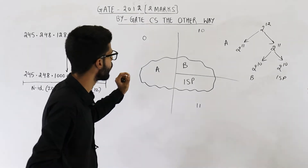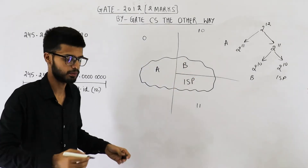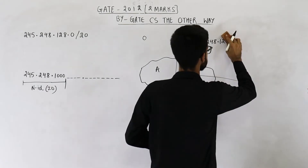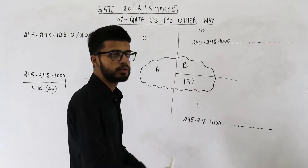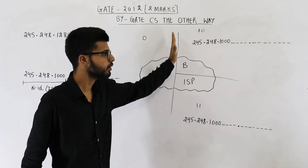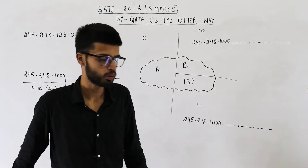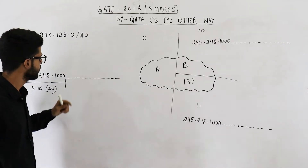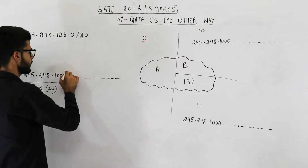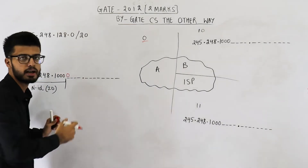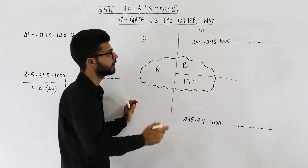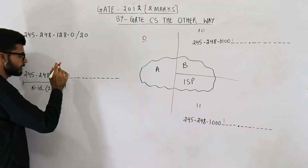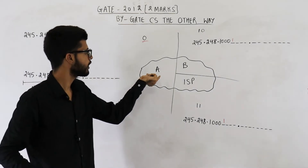Now let us find the network address of each subnet. For step one — dividing into two halves — we fix the first bit of the host ID. If the first bit is zero, we are talking about one half; if the first bit is one, we are talking about the other half. If you see that this bit is zero, you can easily identify which subnet we are talking about.